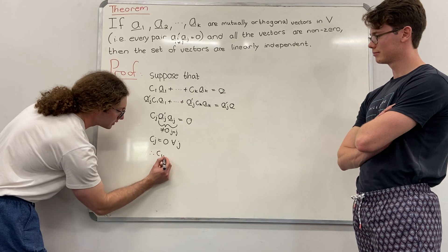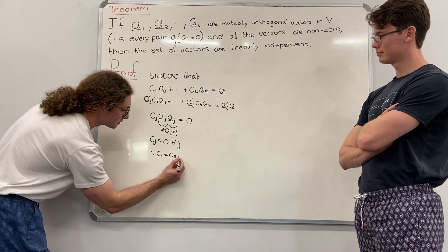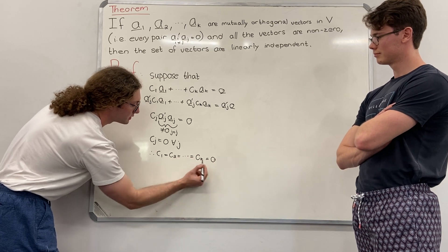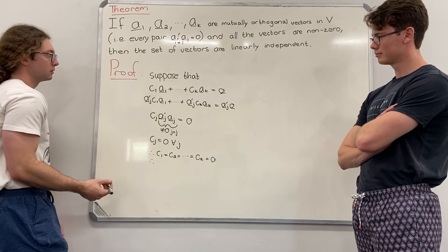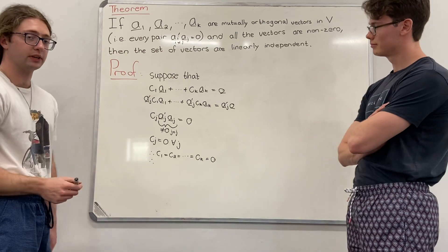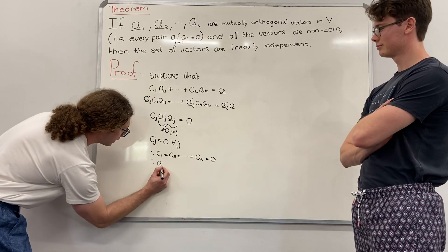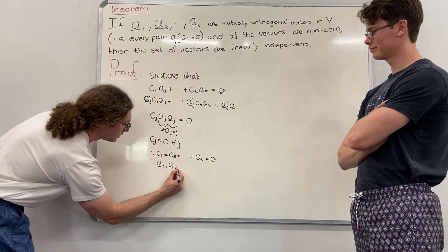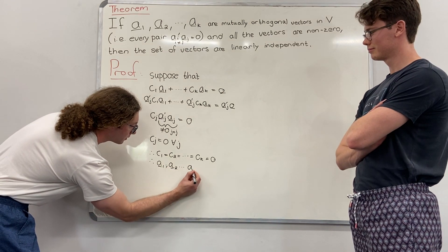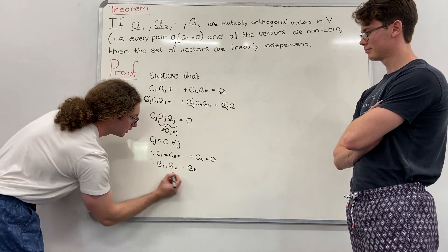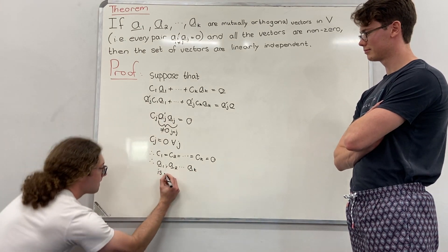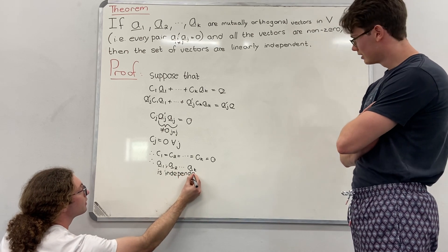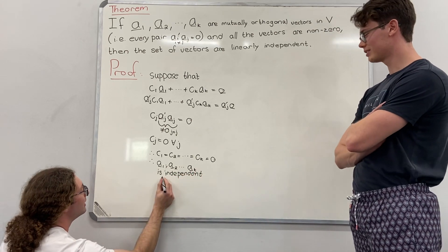Therefore, C_1 equals C_2 equals all the rest, C_k equals 0. Therefore, this set of vectors A_1, A_2, all the way through A_k, is independent. Brilliant.